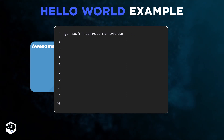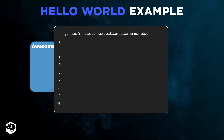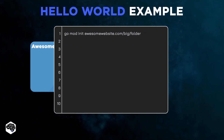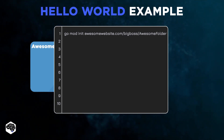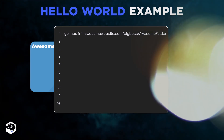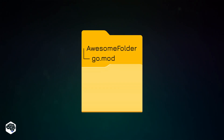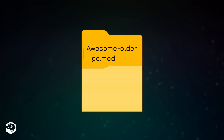Where example.com can be any website where you store your code, the username is your username, and the folder is the folder name in which you want to keep the files. Running this command will create a go.mod file in your working directory. This go.mod file tracks all the dependencies used in the project.